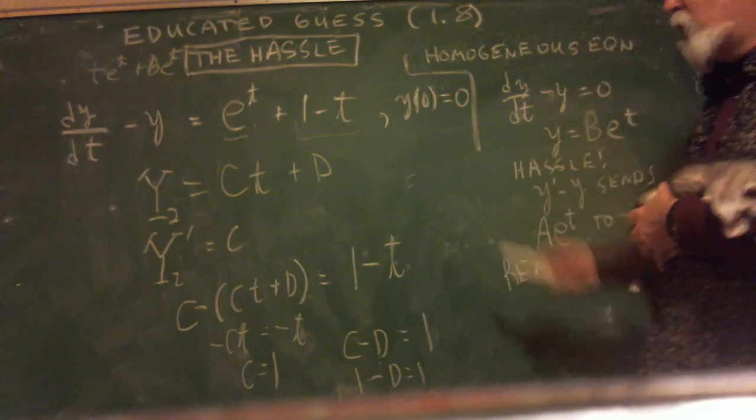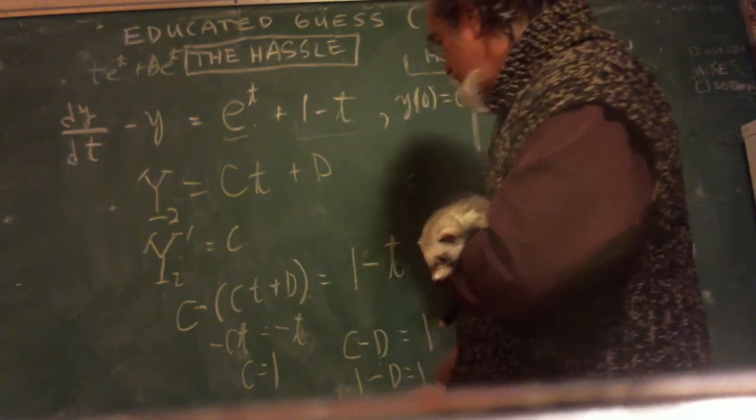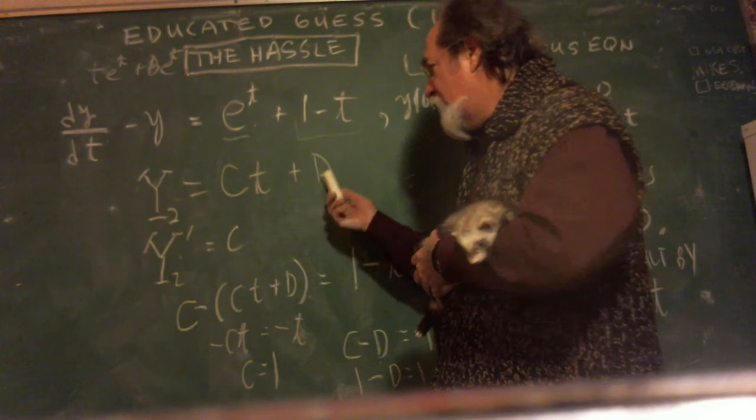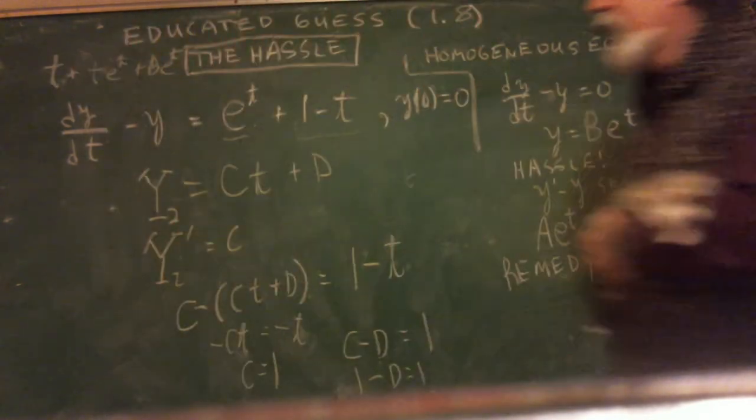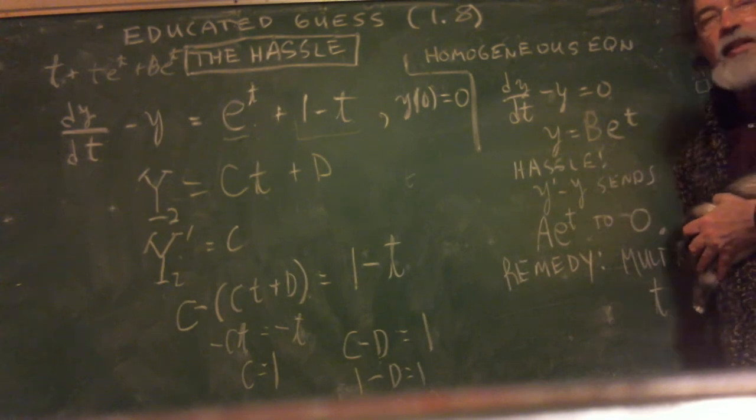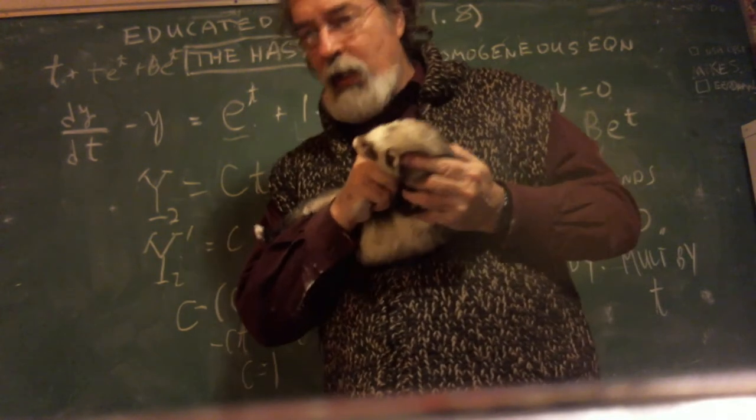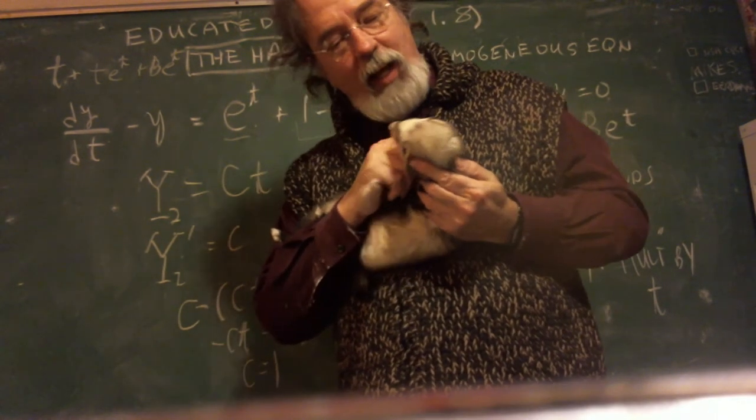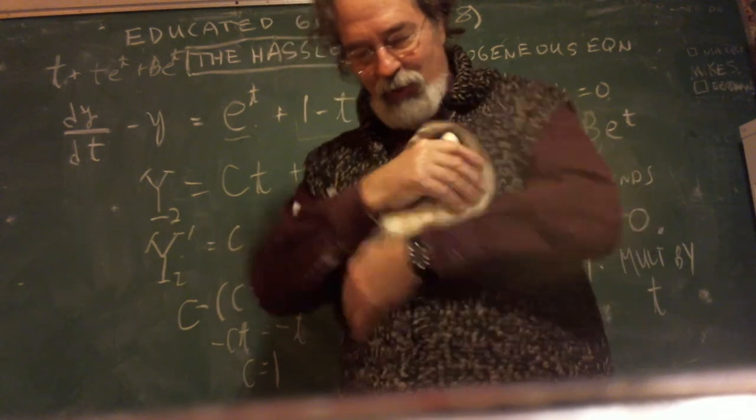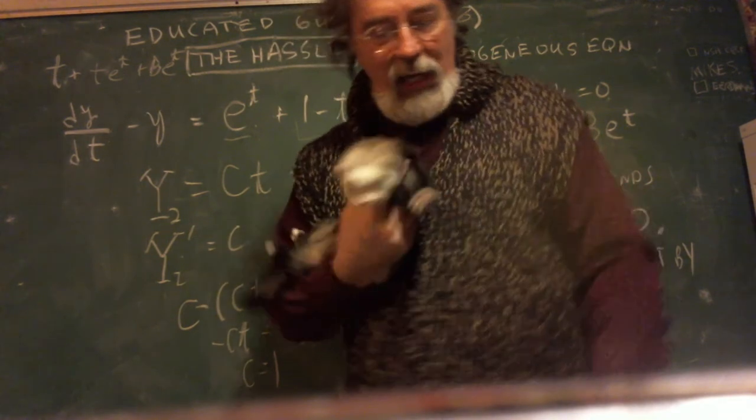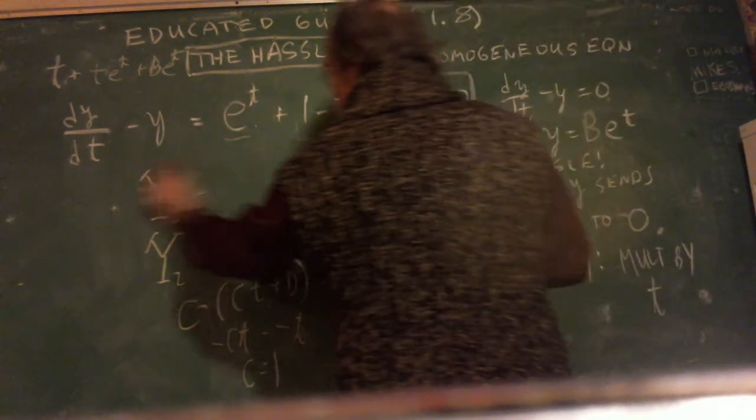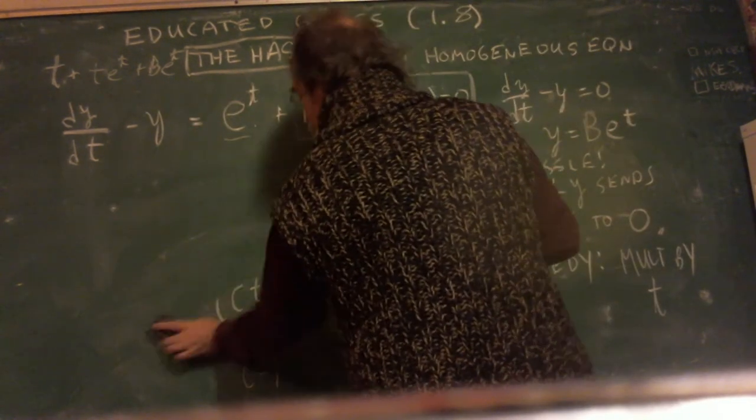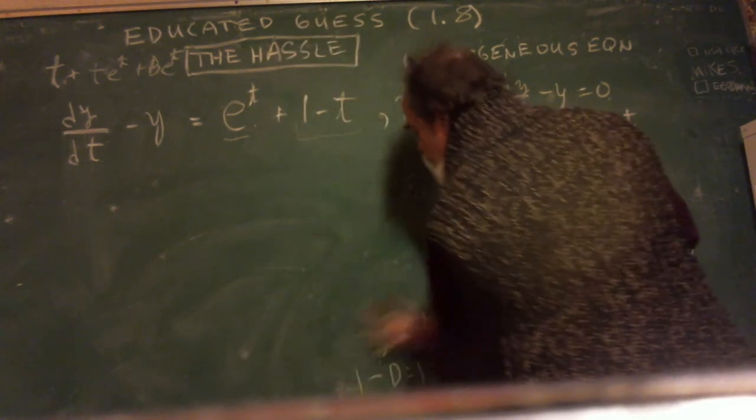All right. So my y sub two is a one·t plus zero. So throw a t on there. And now, I think that's my solution. I think we're done. Are we done, cocoa bananas? Are we done? Well, there's a lot of time left on the clock. I think we should check. Do you like to check the differential equation? I do. I love to check differential equations. So I've got this solution there. I'm going to see if I'm right.